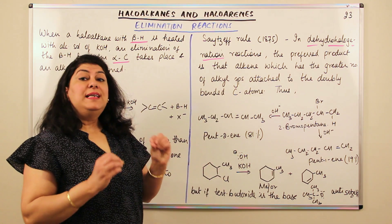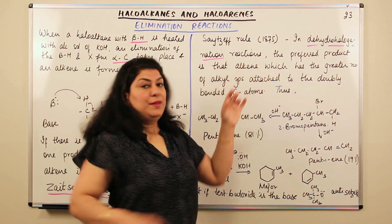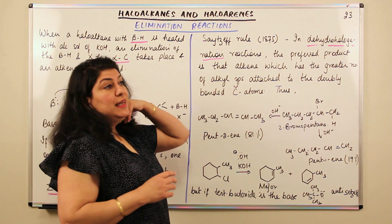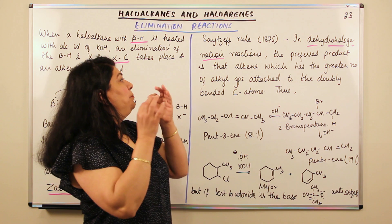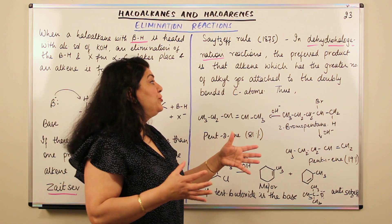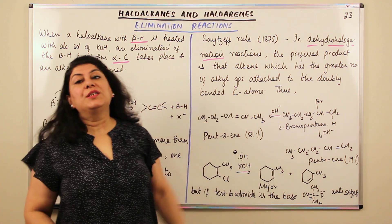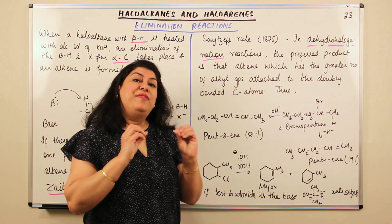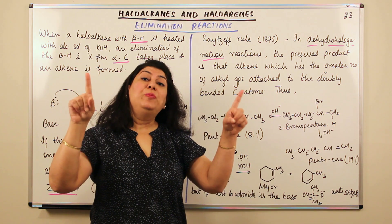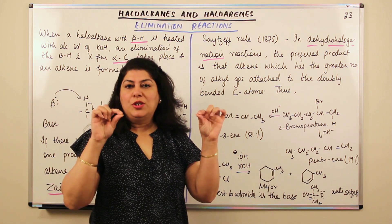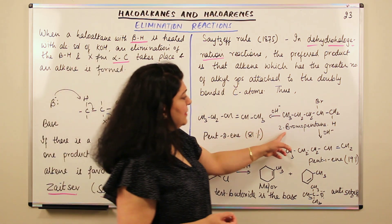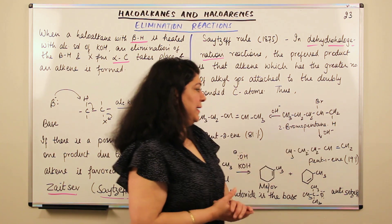Zaitsev's rule was given in 1875 by the Russian scientist Zaitsev. It states that in dehydrohalogenation reactions, the preferred product is the alkene which has the greater number of alkyl groups attached to the doubly bonded carbon atoms — the more substituted alkene will be favoured. Let us take an example: this is 2-bromopentane.